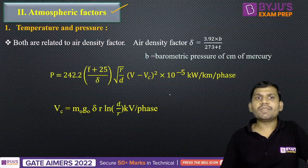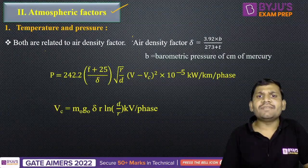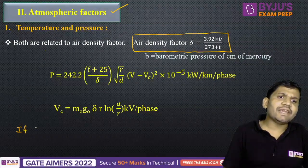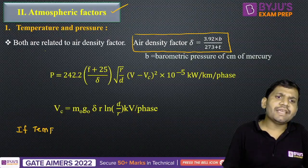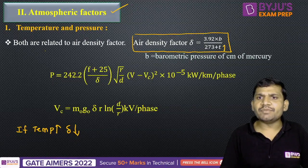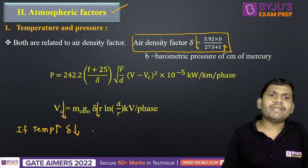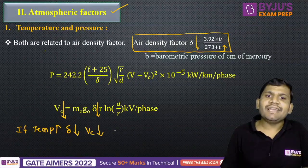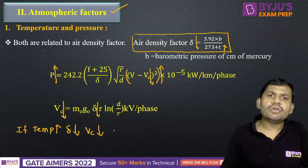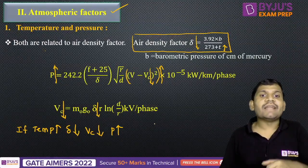Next, atmospheric factors. One factor is temperature and pressure, which depends on the air density factor. If temperature increases, the air density factor reduces. If the air density factor reduces, then the critical disruptive voltage reduces. When the critical disruptive voltage reduces, V minus Vc becomes more dominant and increases, so the power loss also increases. If the temperature is more, then the corona loss is also more.